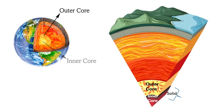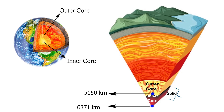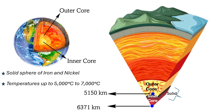The inner core of the Earth is a fascinating part of our planet. Located at the very center, it starts at a depth of about 5,150 kilometers below the surface and extends to the center at about 6,371 kilometers deep. It is a solid sphere of iron and nickel, with temperatures around 5,000 to 7,000 degrees Celsius — similar to the surface of the sun. Despite being solid, the inner core can still change shape and experience movements.